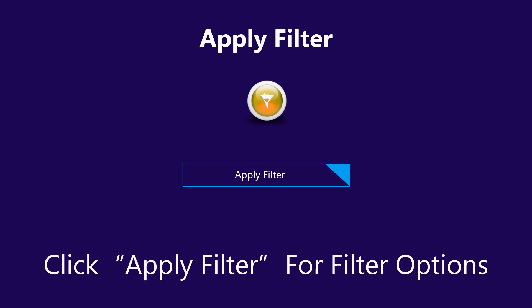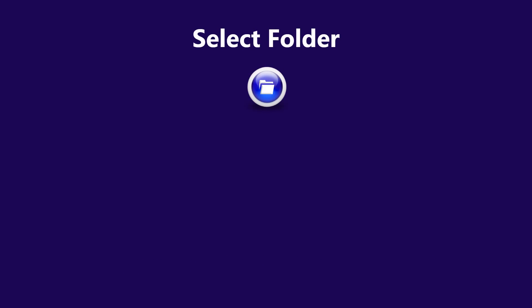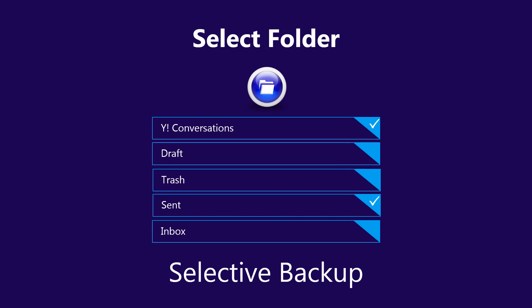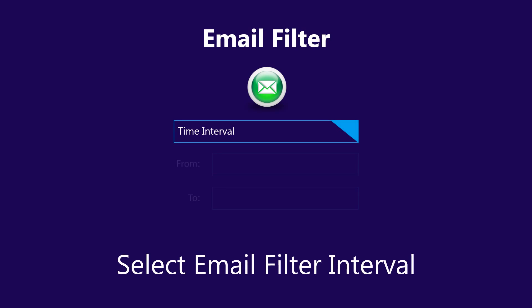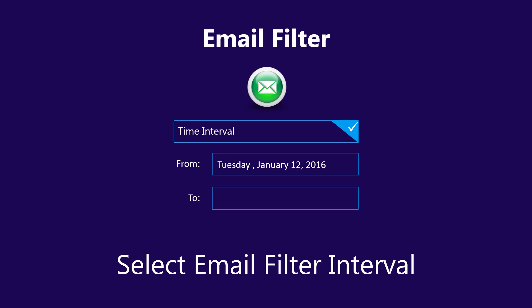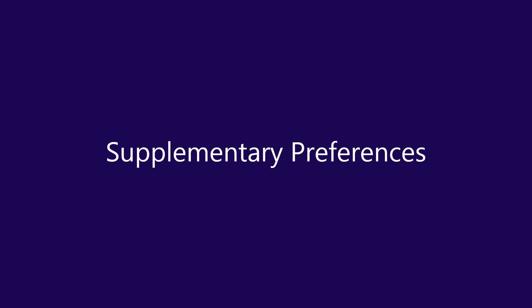Select the Apply Filter option to selectively download your Yahoo emails using predefined filters. Select only the folders which are needed from your Yahoo account. Email Filter is another predefined filter option. Using this option, you can back up all of your Yahoo emails from a specific date range. The software also provides supplementary preferences.